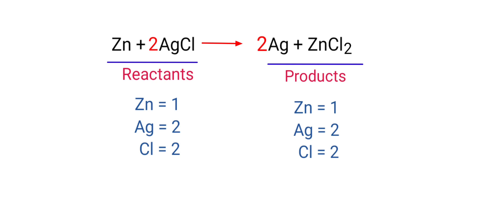The equation is now balanced. There are one zinc atom, two silver atoms, and two chlorine atoms on both sides.